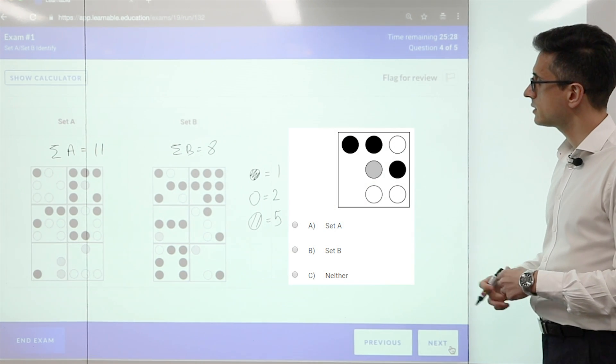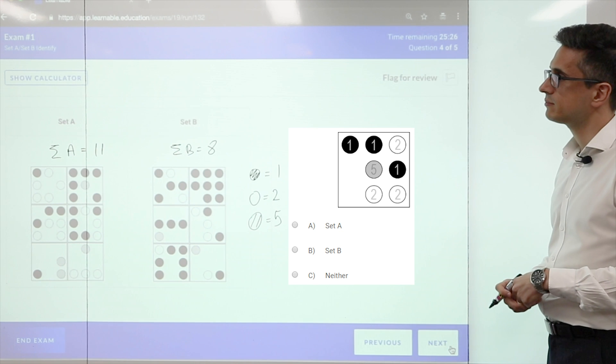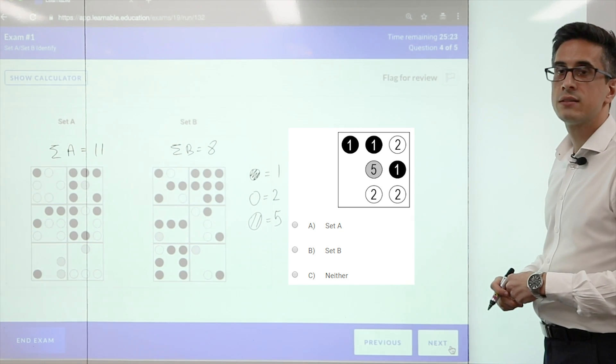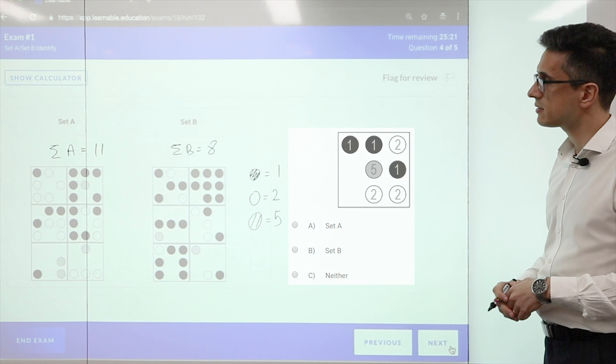For the fourth question, we can add up the shapes, it adds up to 14, so it belongs to neither set.